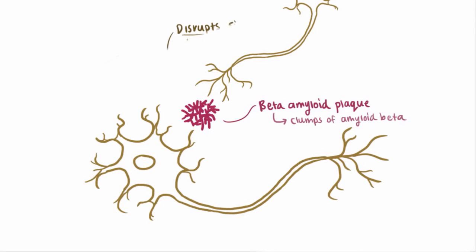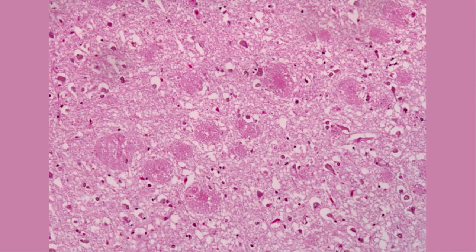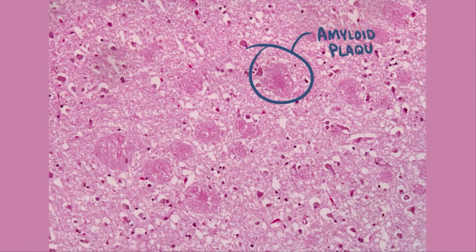It's also thought that these plaques can start up an immune response and cause inflammation, which might damage surrounding neurons. Here's an image of amyloid plaque on histology. These clumps are buildups of beta-amyloid, and this is happening outside the cells.